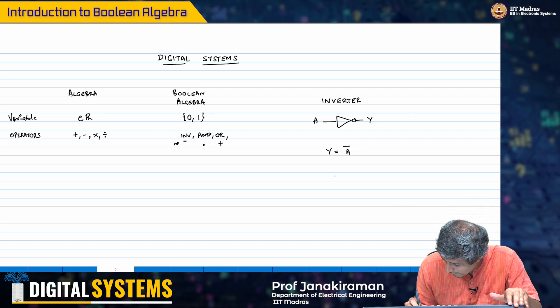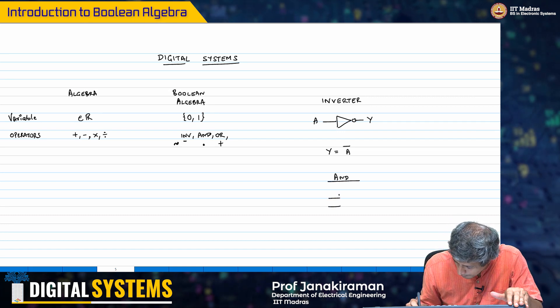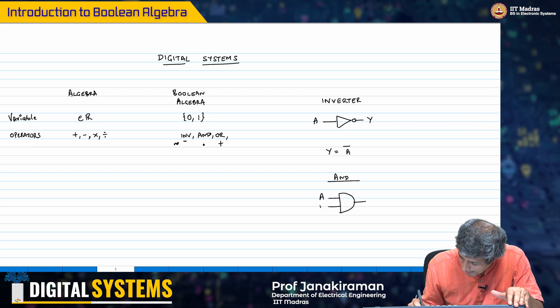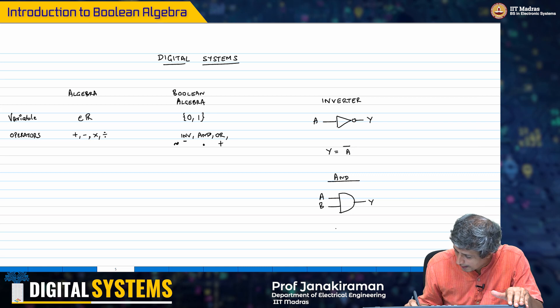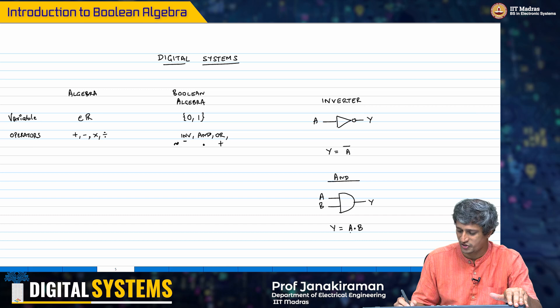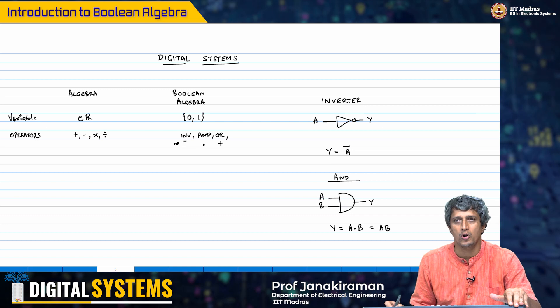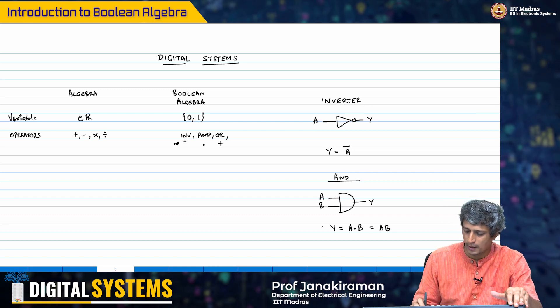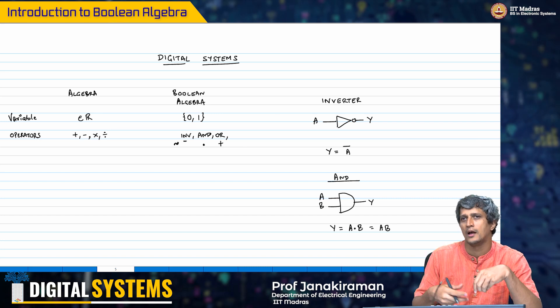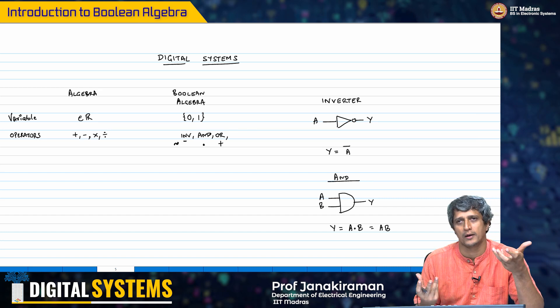Similarly, you have an AND gate which operates on two inputs a and b, and you tend to say y equal to a dot b or just ab. ab means we are talking about AND. Here it is very evident that since it is a product, only if both happen to be 1 you will get the output y to be 1.